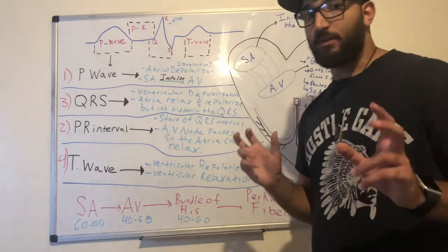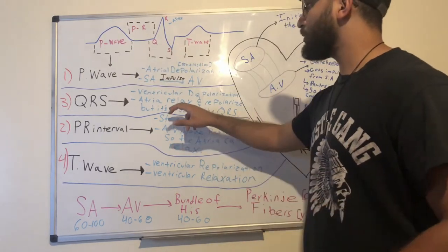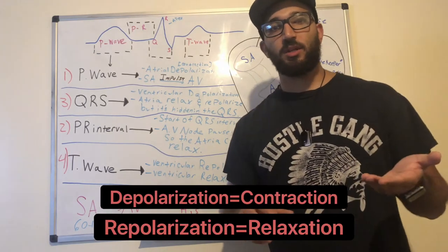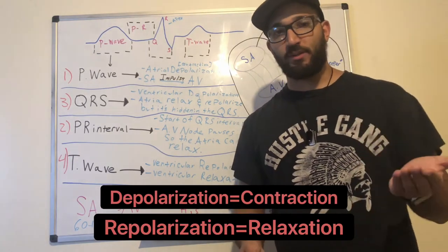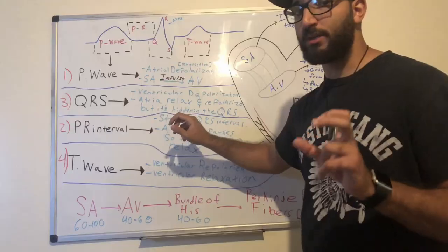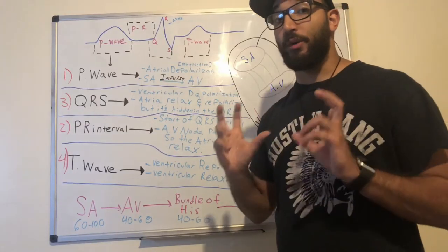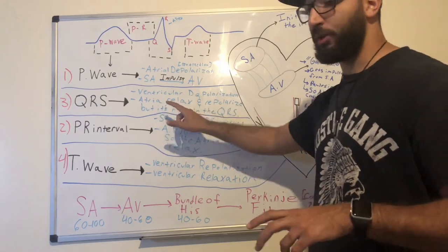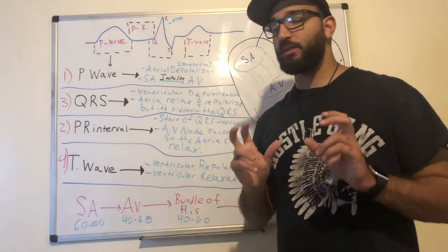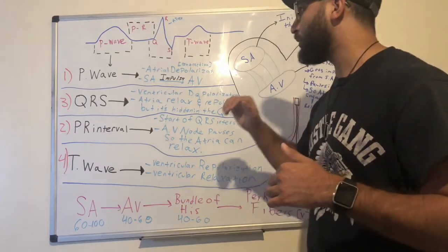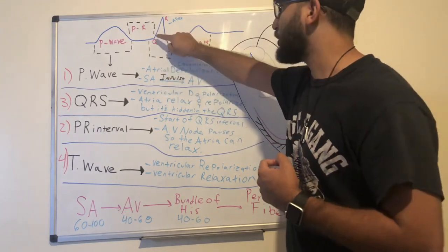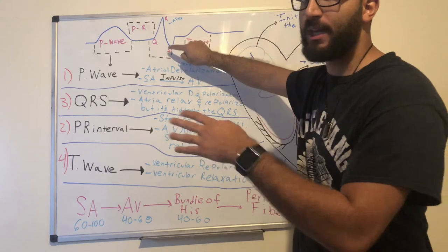Now we have the QRS complex. The QRS complex is known as ventricular depolarization. Depolarization means contraction; repolarization means relaxation. Within the QRS complex, the ventricles are going to contract. Keep in mind that the atria are going to relax and repolarize, but it will be hidden within the QRS complex. So the ventricles are contracting while the atria are relaxing at this point.